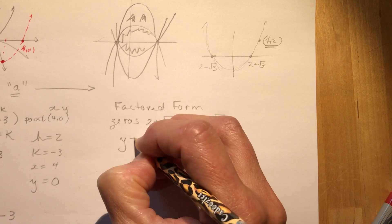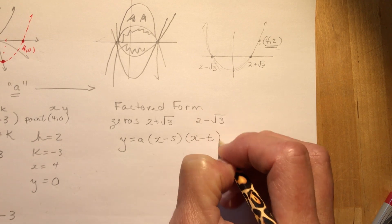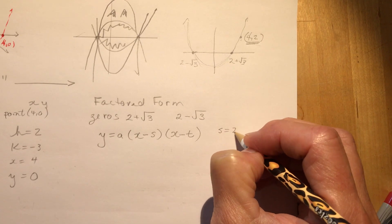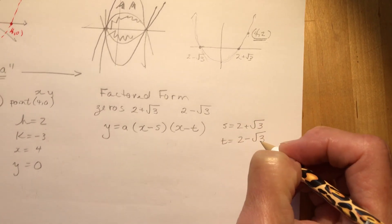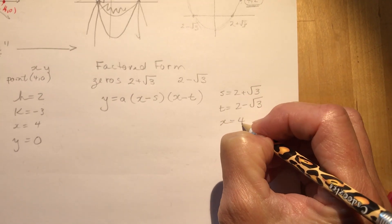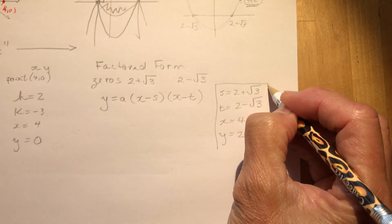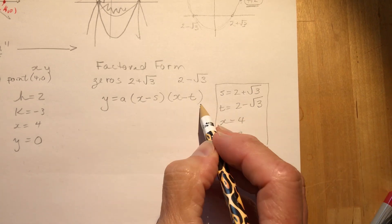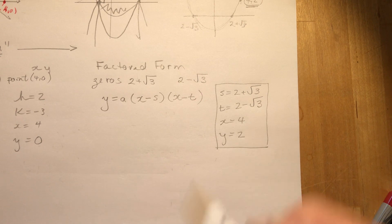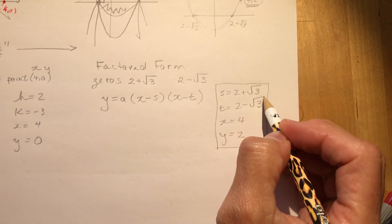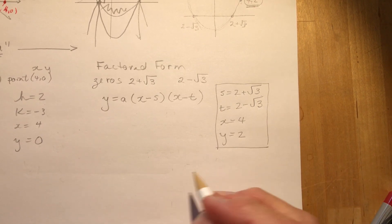So in factored form, and you need to know all these little forms, y equals a times x minus s times x minus t. And my s is going to be two plus root three. My t is going to be two minus root three. My x is going to be four. And my y is going to be equal to two. So again, I have this little box of information that I'm going to plug in to this equation to solve for a. So again, this is a trickier one because I'm using a radical. And it's a little exercise to expect that you should be able to do in grade 11 math.